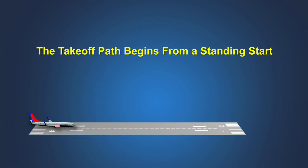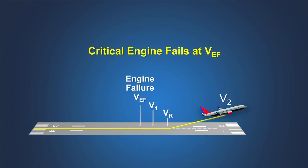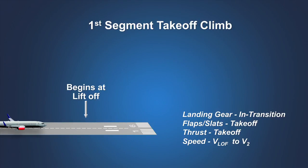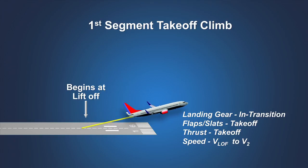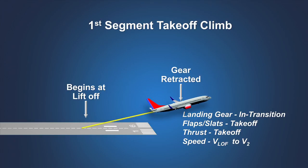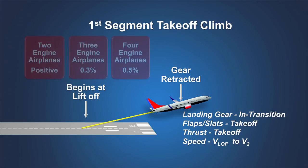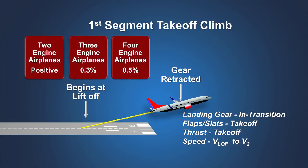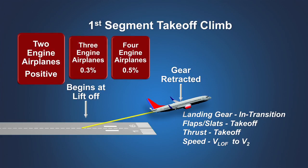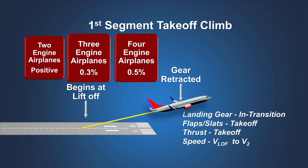The takeoff path begins from a standing start. The critical engine is failed at VEF and remains inoperative for the rest of the takeoff. The first segment begins at lift-off and continues until the landing gear is fully retracted. The airplane is accelerated in the air to V2 speed. During this segment, a turbine-powered airplane with two engines must be capable of achieving a positive climb gradient in still air with one engine inoperative and without the benefit of ground effect.